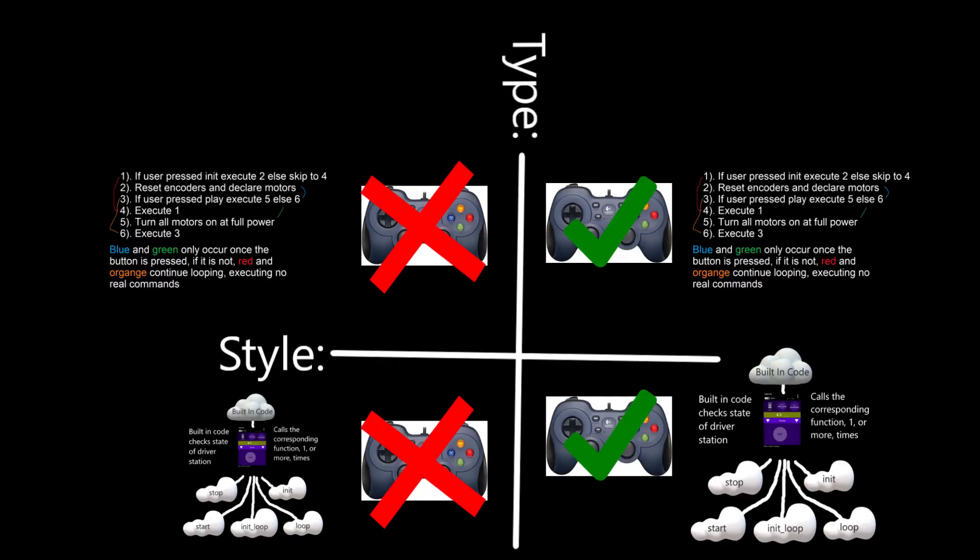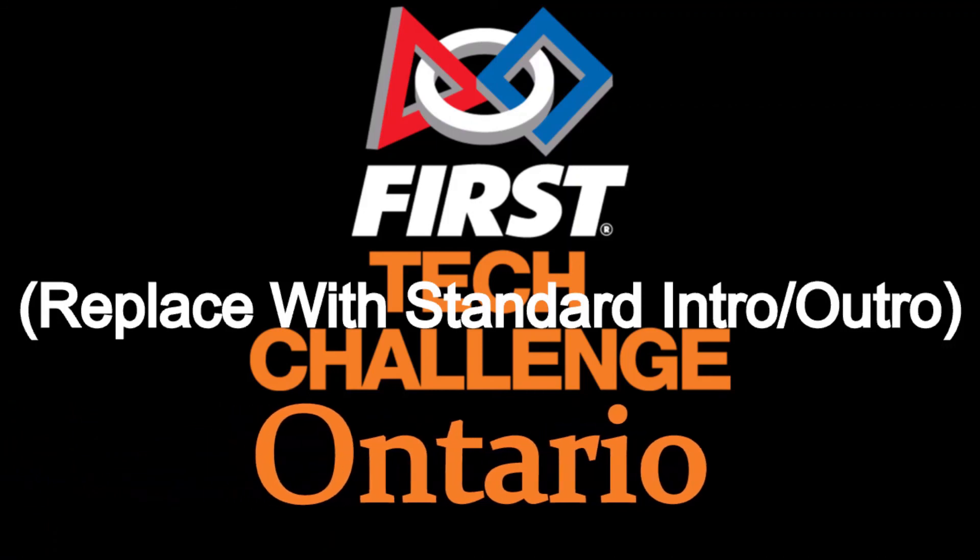Hopefully, you learned more about the program flow of an FTC op-mode and the different types of op-modes. If you are unable to complete the challenge, look in the description to find the source code for both implementations. In our next tutorial, we will begin to look at some more FTC-specific functions that allow you to control your op-mode. As always, feel free to leave any questions you have in the comments section, and we will see you next time.